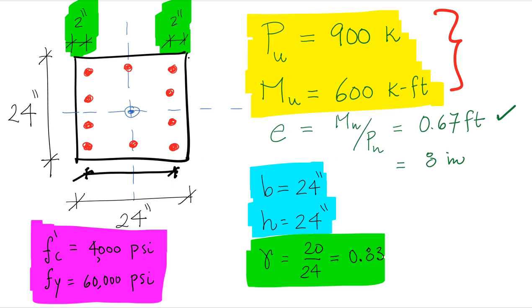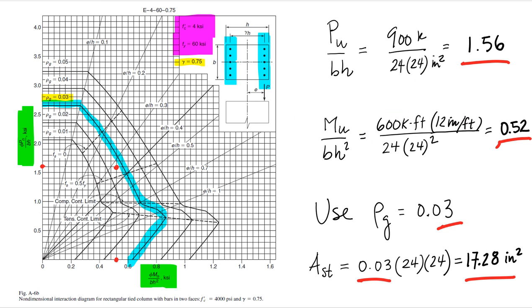Basically, this is how you design a column if you have a normalized interaction diagram.